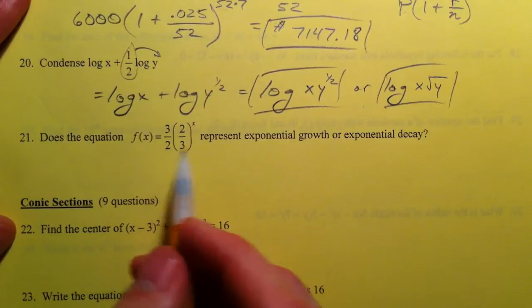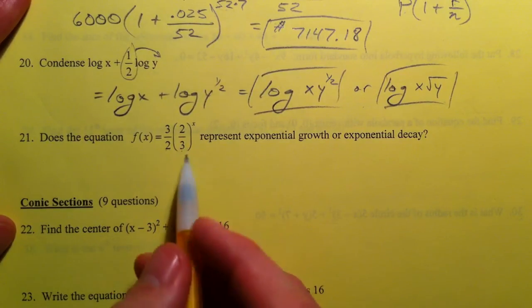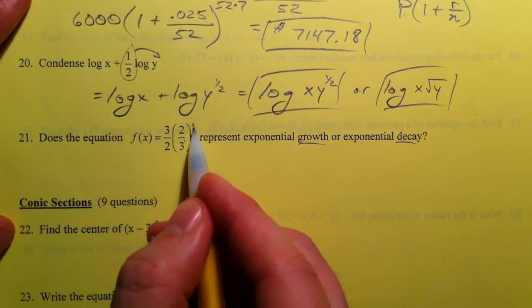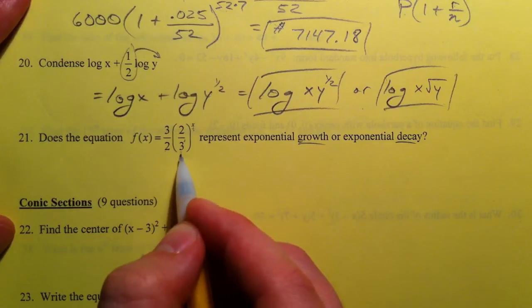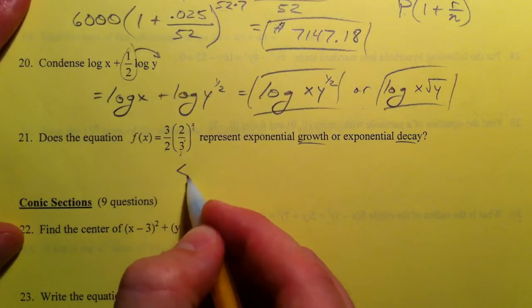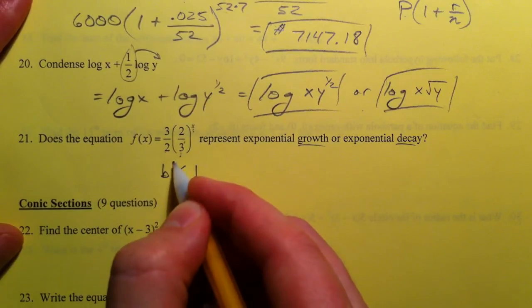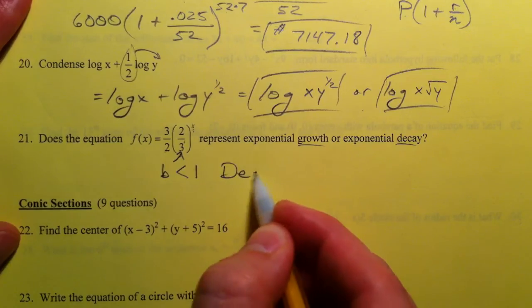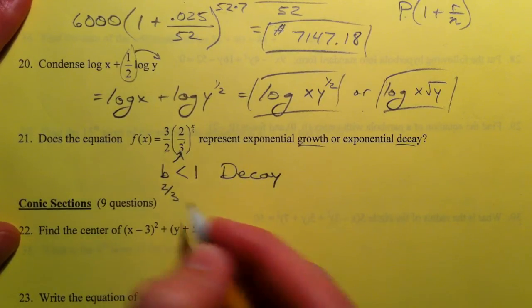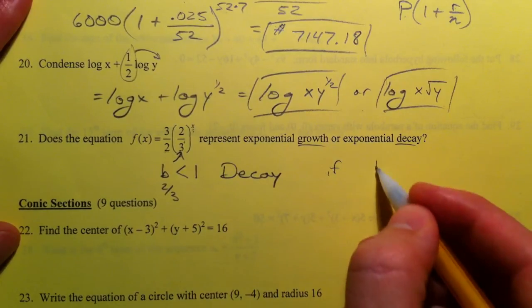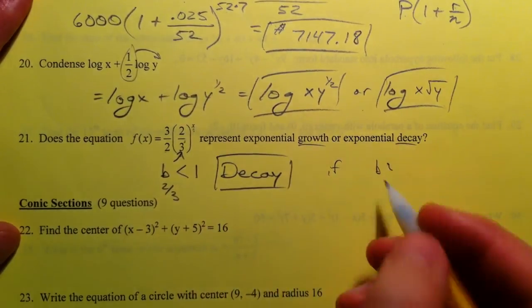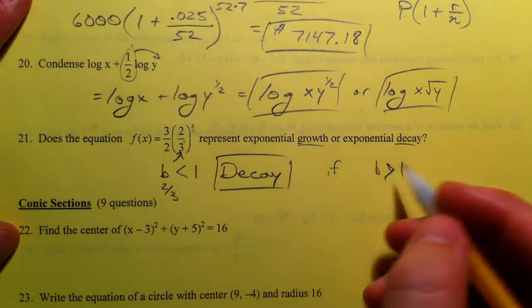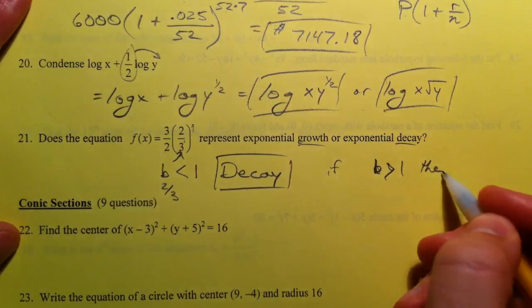Does the equation f(x) = (3/2)(2/3)^x represent growth or decay? Well, this 2/3 is being raised to the x, so we repeatedly multiply by 2/3. So if we have a number less than 1, this is going to be decay. If b is bigger than 1, then the numbers are going to get bigger every time when you multiply by it, then it's going to be growth.